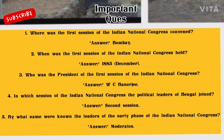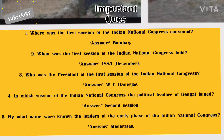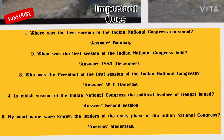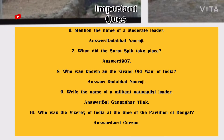Number 4: In which session of Indian National Congress did the political leaders of Bengal join? Answer: Second session. Number 5: By what name were the leaders of the early phase of the Indian National Congress known? Answer: Moderates. Number 6: Mention the name of a moderate leader. Answer: Dadabhai Naoroji.